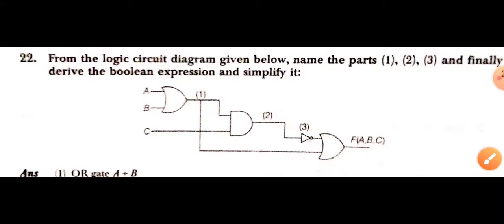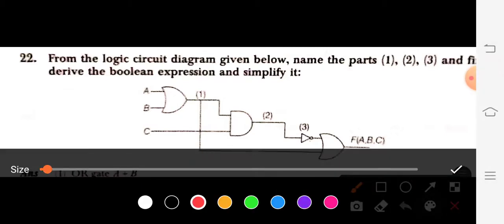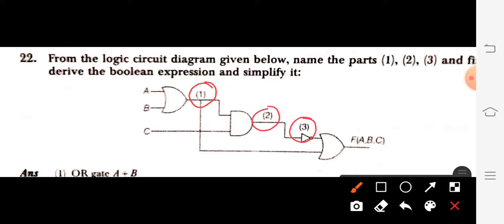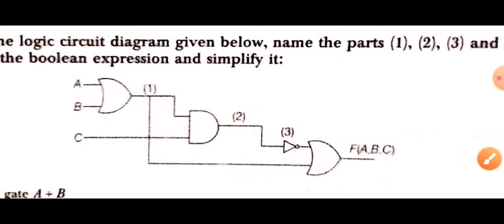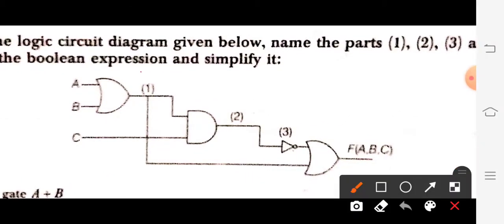Next question: from the logic circuit diagram given below, name the parts 1, 2, and 3, and derive and simplify the Boolean expression. At position 1, it will be A + B because you can see this is an OR gate. Then A + B will get passed into the AND gate and C will be dotted with it, so position 2 is (A + B)·C.